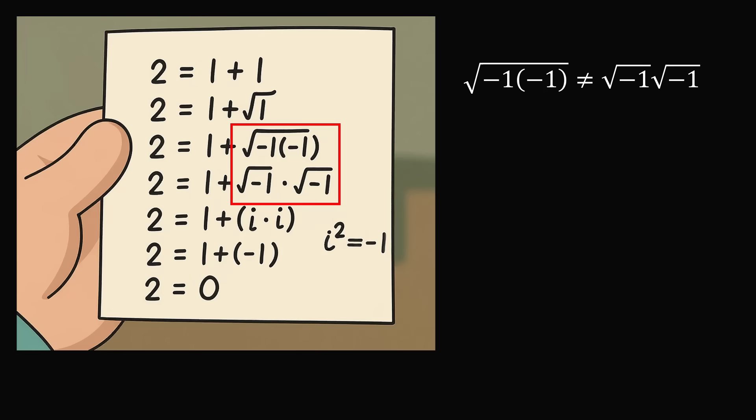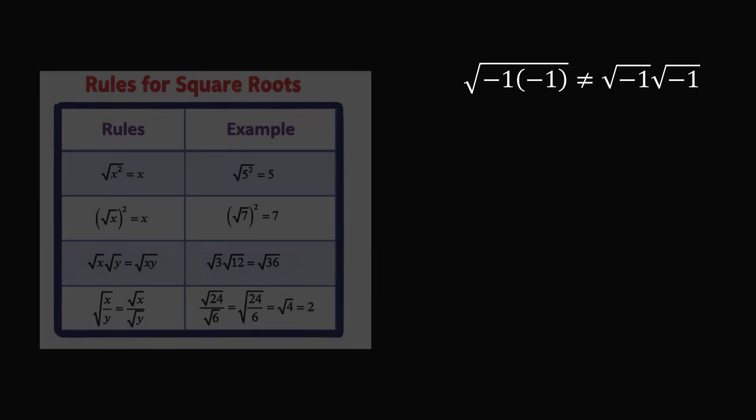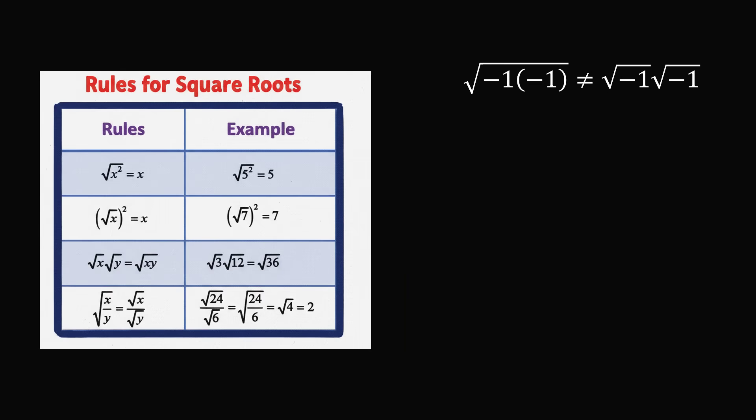Now a student could be forgiven for applying this rule, because in class we are often taught the rules for square roots, and we have to blindly just memorize these rules and apply them so that we can solve all the test problems in time. It would seem that the square root of a product is equal to the product of the square roots.